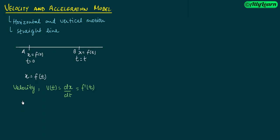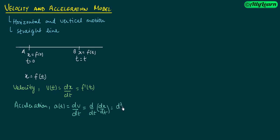I can also talk about acceleration. Acceleration a(t) is the derivative of velocity, which is equal to d/dt of velocity, which equals d²x/dt². And you can write a(t) = dv(t)/dt. So d/dt is nothing but v(t), meaning the second derivative of x with respect to t.